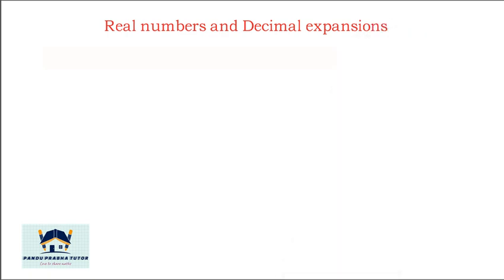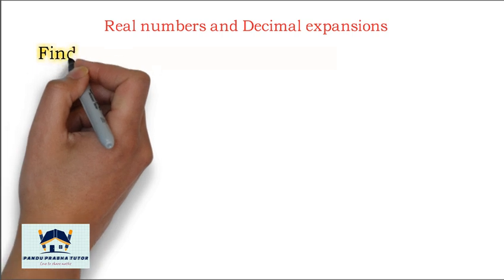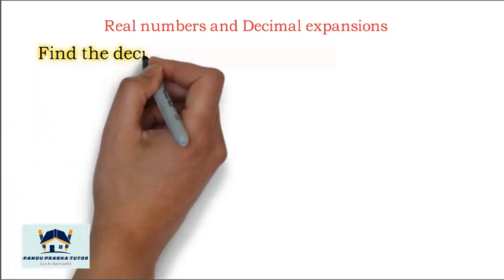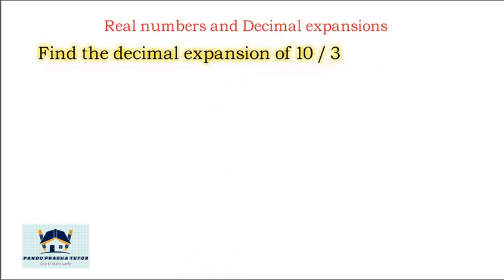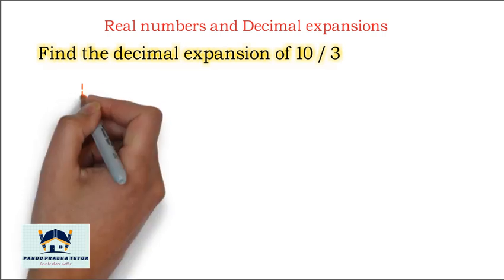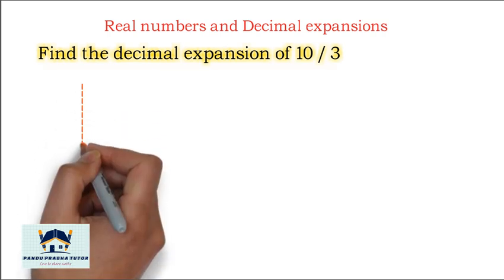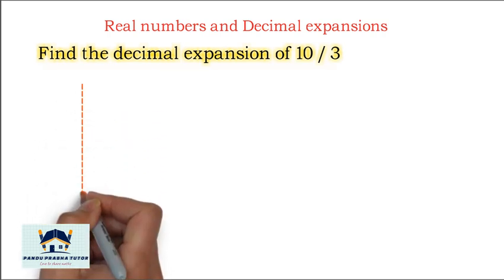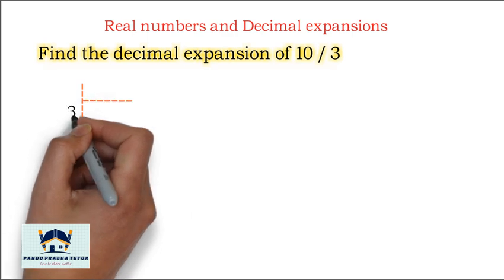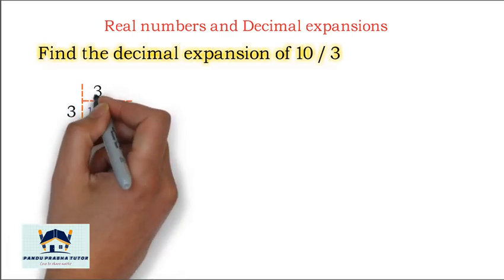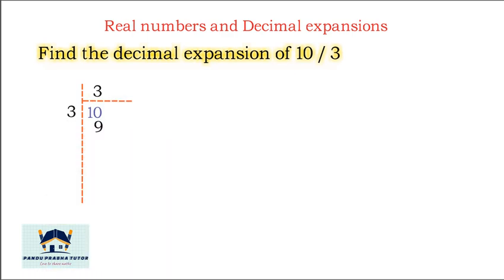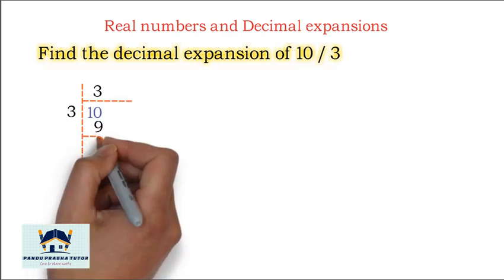Class 9. Find the decimal expansion of 10 divided by 3. We divide: 3 goes into 10, 3 times 3 is 9, so 10 minus 9 is 1.